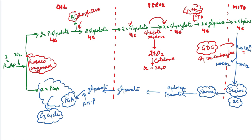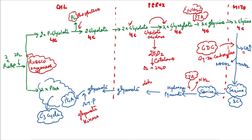A very important enzyme in the C2 cycle is glycine decarboxylase (GDC), because CO2 is released at this step. For the conversion of glycolate to glycine, an amino group is transferred, so the enzyme is transaminase. For hydroxypyruvate to glycerate, the enzyme involved is dehydrogenase, where NADH is converted to NAD+. Glycerate kinase converts glycerate to PGA.